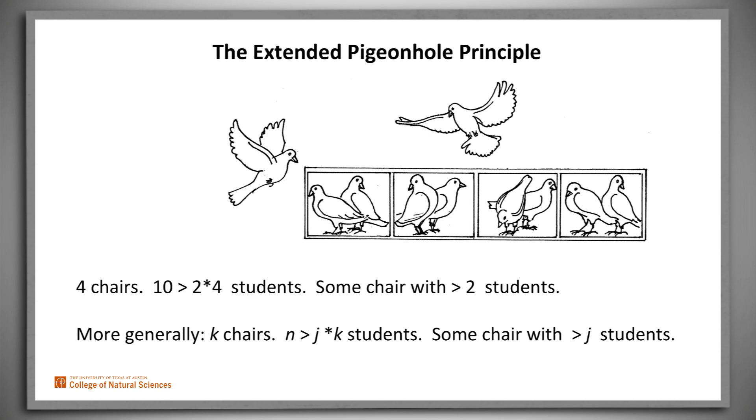More generally, suppose that there are K chairs and N greater than J times K students for some integer J. Then even if we tried to spread the students out uniformly into the chairs, we would end up with J students in each chair and at least one student left over. So at least one chair has more than J students once everyone is seated.